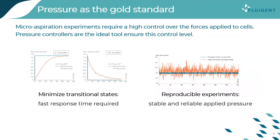Micropipette aspiration is an excellent tool for several life science applications, but it requires high control over the forces applied to cells. To tackle this challenge, pressure controllers are one of the ideal tools. A fast response time is necessary to minimize transitional states during the experiments. Additionally, for reproducible experiments, a stable and reliable pressure must be applied.